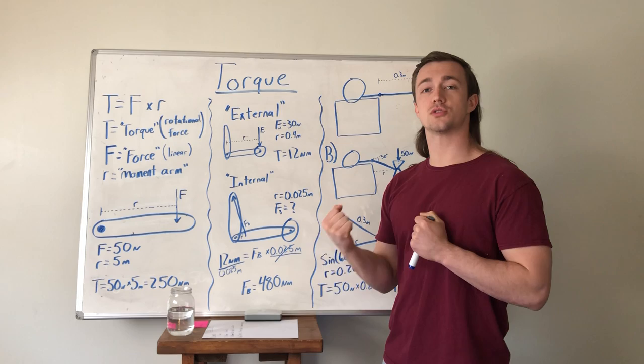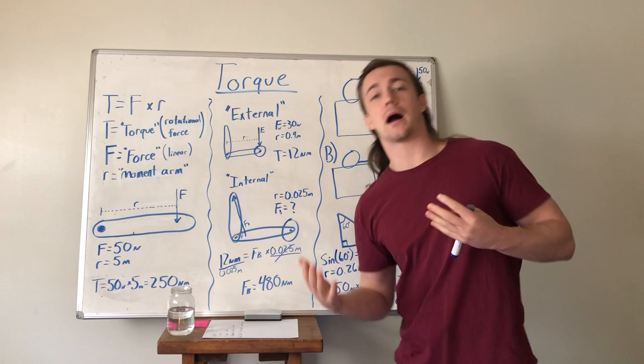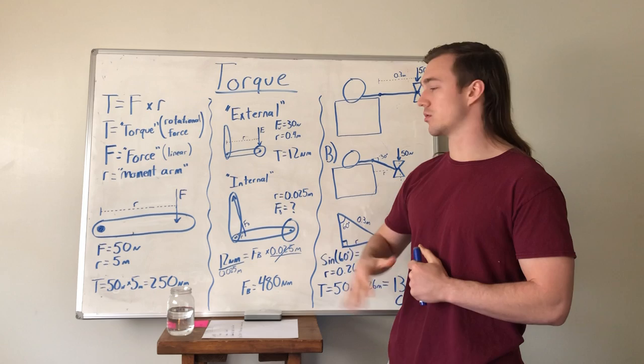So torque occurs in the body mostly around the joints. If we want to talk about the movement of our body as a gross system, we can start referring to our center of mass, but for the most part, let's just keep talking about torques about a joint. Your homework for this week is going to be a torque activity.